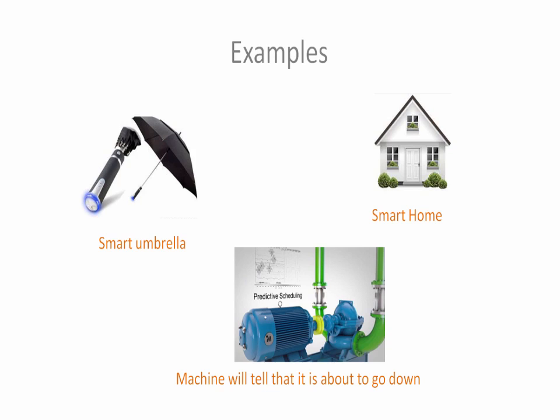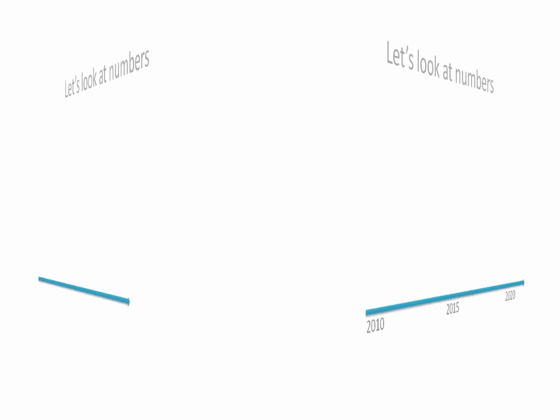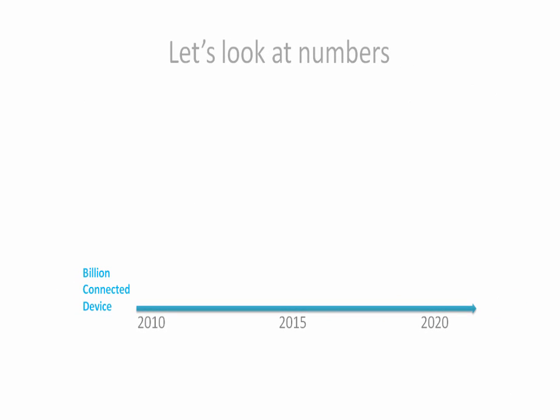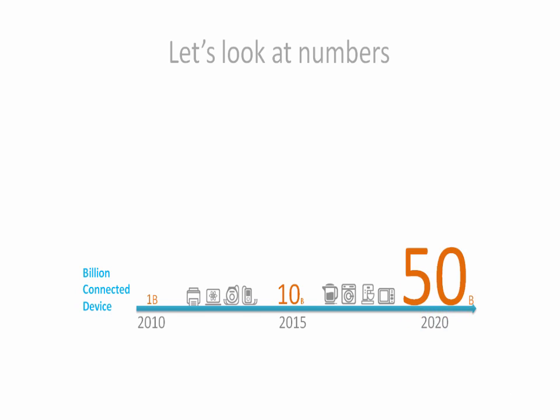This can be a game changer. Now let's look at numbers and let them do the talking. In 2010 we had 1 billion connected devices, and that number rose to 10 billion in 2015. The prediction says that by 2020 we will have 50 billion connected devices. Comparing this with world population growth, the world population is not growing at the scale that connected devices are growing.